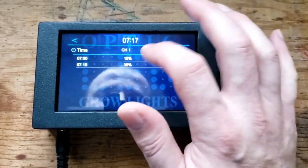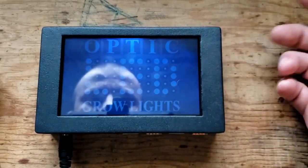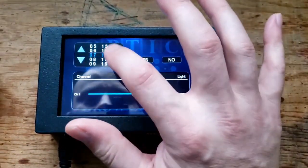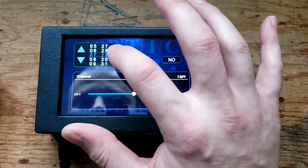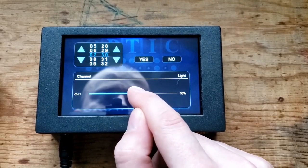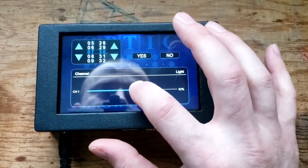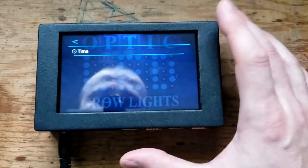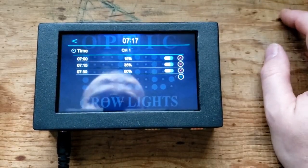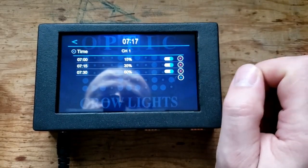So you'll want to go back to seven and we'll go seven fifteen a.m., fifteen minutes later, and then we'll set the dimmer to thirty-five. Say so now you see at seven a.m. we come on fifteen percent power, seven fifteen the light gets bumped up to thirty-five percent power.